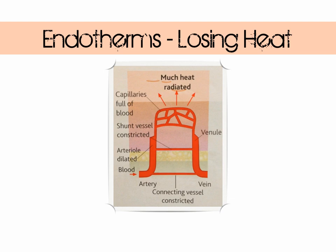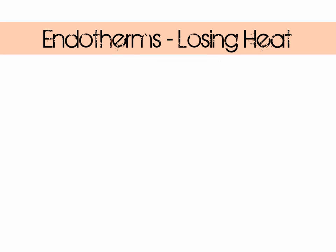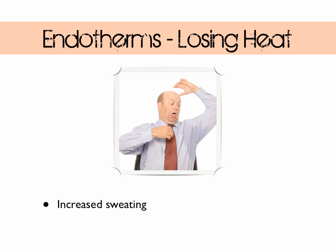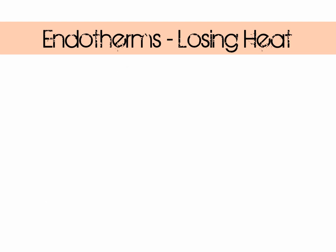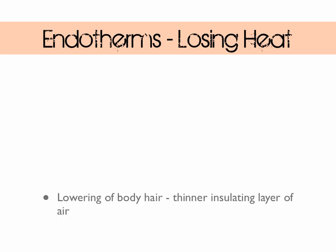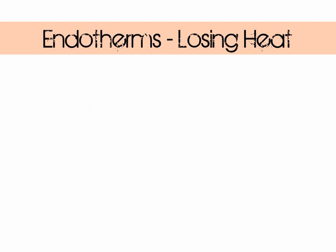Let's look at how endotherms lose heat if they're too warm. First up is vasodilation — the opposite of vasoconstriction. The blood vessels close to the surface are opened up so plenty of blood flows through and loads of heat can be lost by radiation. We can also sweat more. Endotherms can also lower their body hair, which makes the layer of insulating air trapped between hairs much thinner. Endotherms can also exhibit behavioural mechanisms like finding shelter.